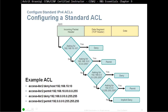Configuring a standard ACL — for example, we create access-list 2: deny host 192.168.10.10, then on the same access-list permit network 10.0, then deny anything starting with 192.168, then permit anything starting with 192. The order is important. More specific statements should be placed at the top — you can see the host statement is right at the top. If you put the host statement at the end, it will not have any effect, because after there's a match, it will just be permitted.